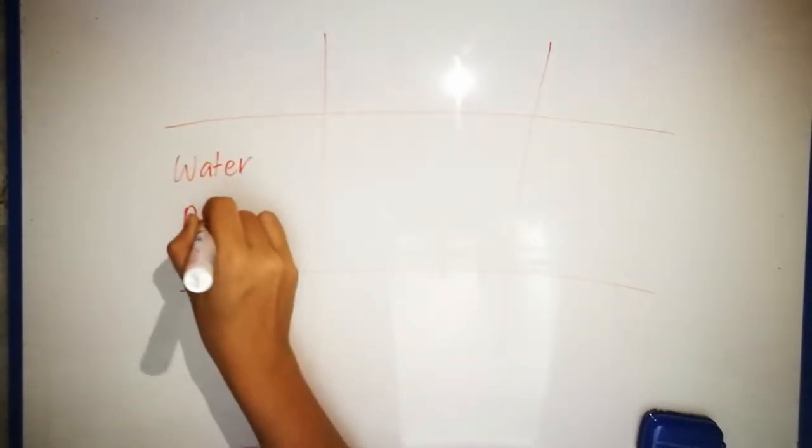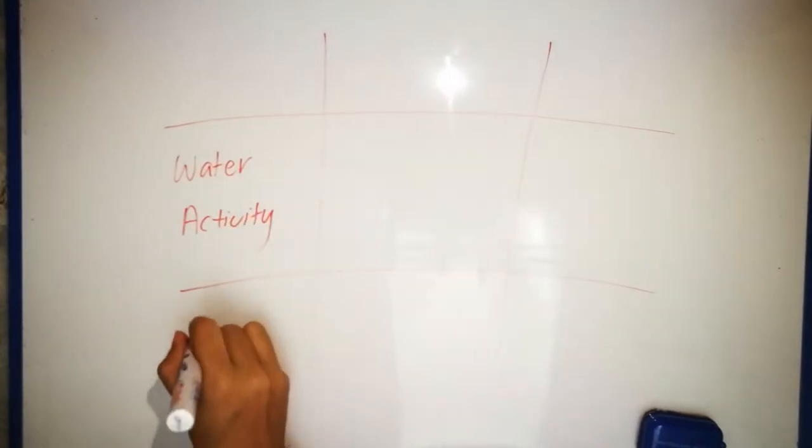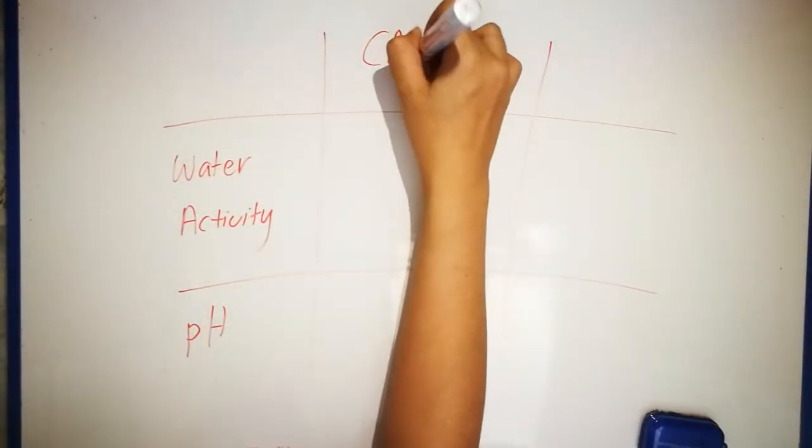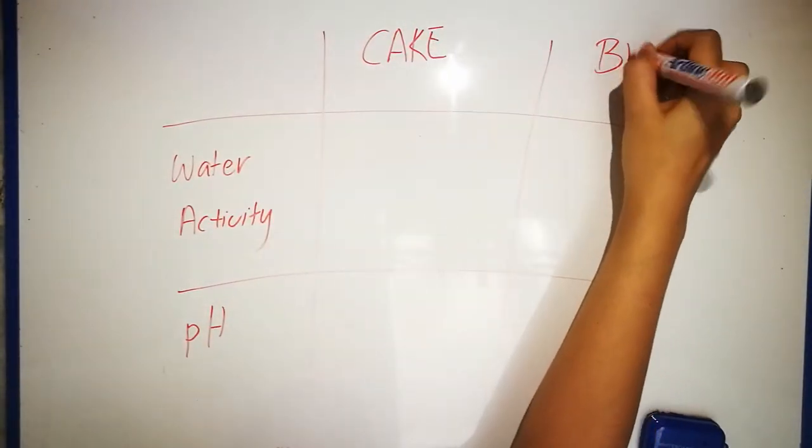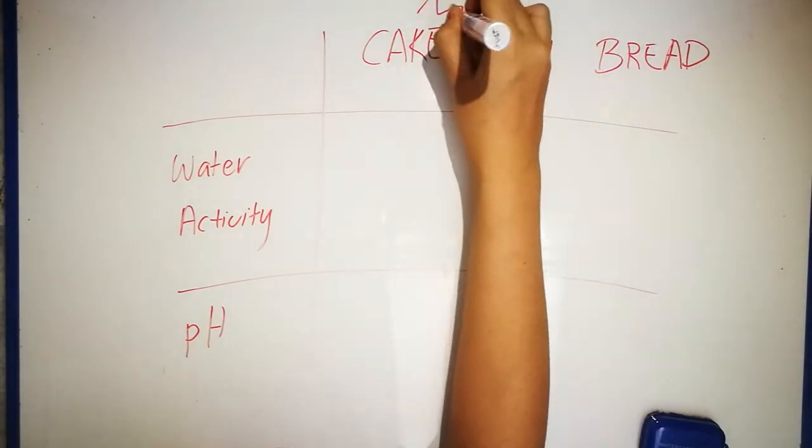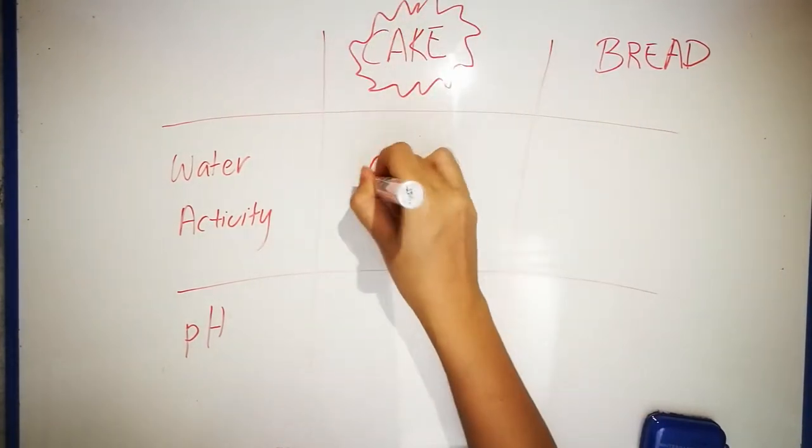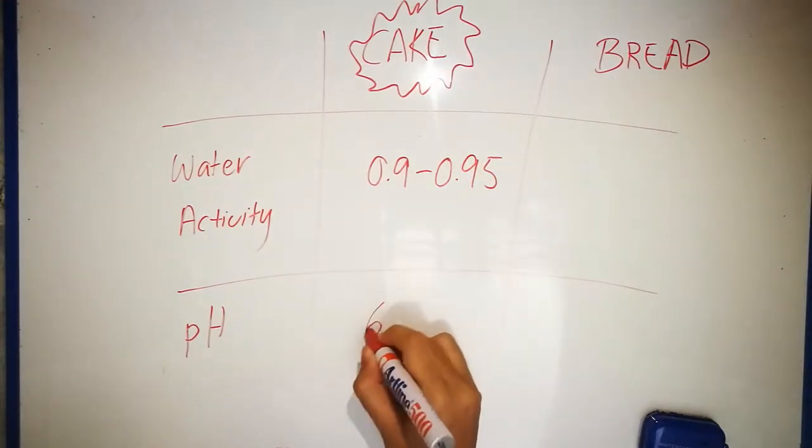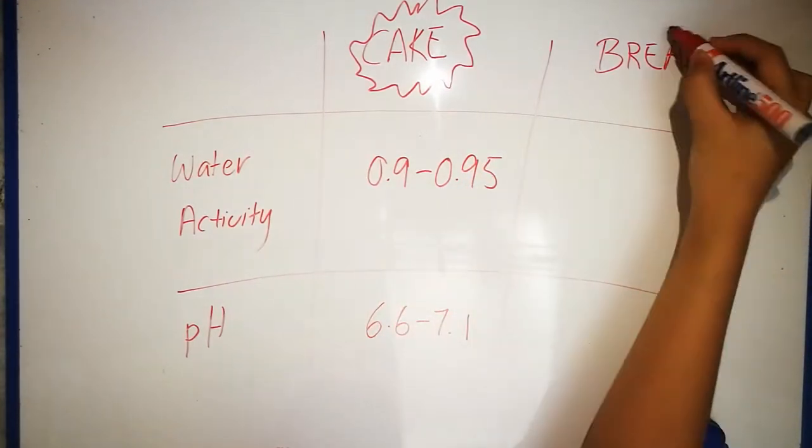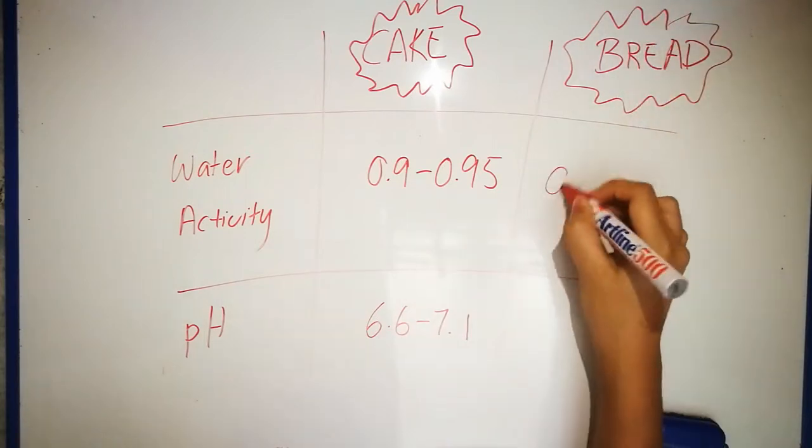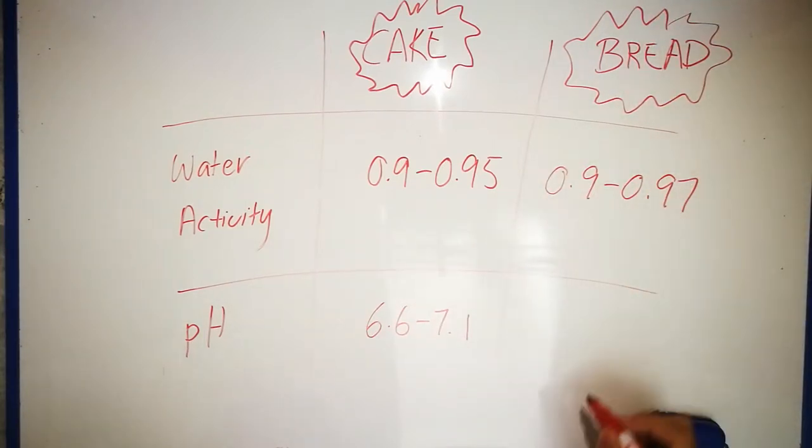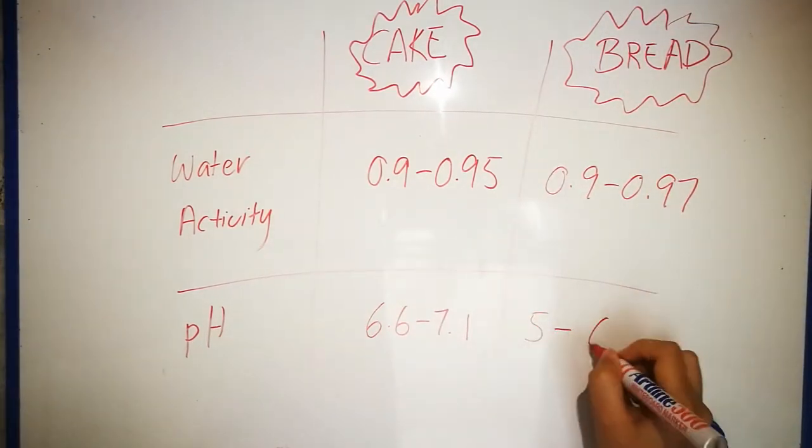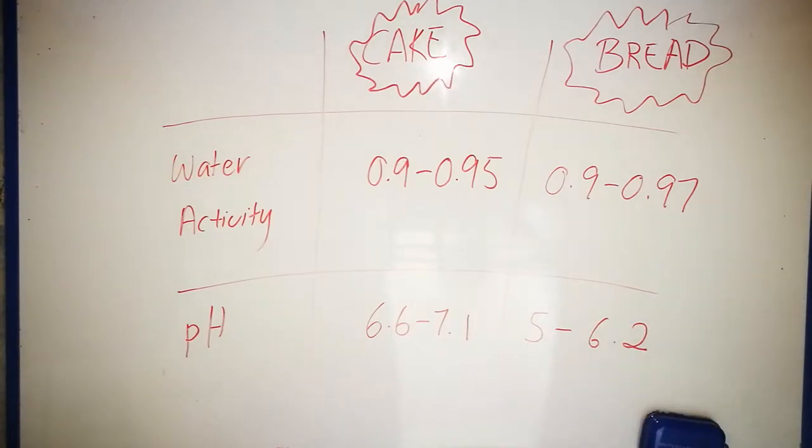Now let's move on to the water activity and pH of the butter cake and butter bread. The water activity of the butter cake is around 0.9 to 0.95 with a pH of 6.6 to 7.1. As for bread, the water activity is 0.9 to 0.97 with its pH ranging from 5 to 6.2.